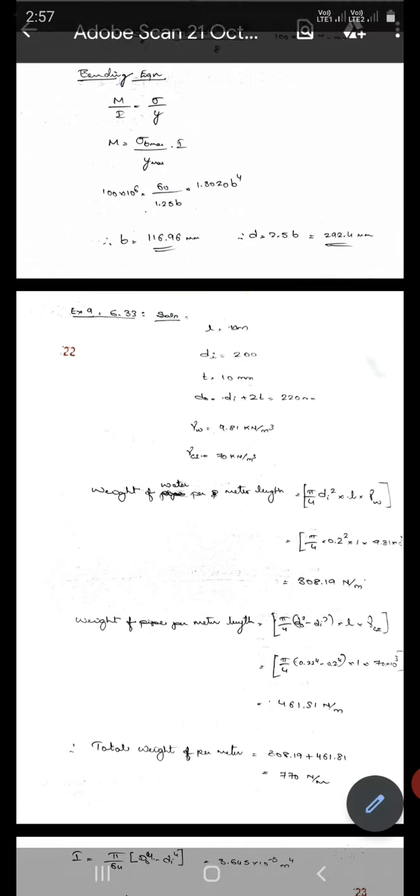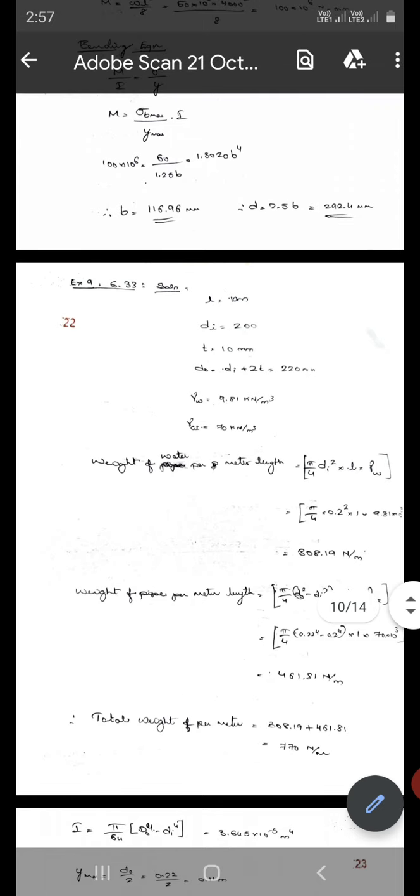Length is 10 meters. Internal diameter d_i is 200, thickness is 10 mm. Therefore d_o is d_i plus 2t, that is 220 mm.